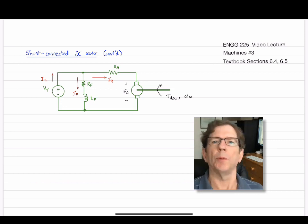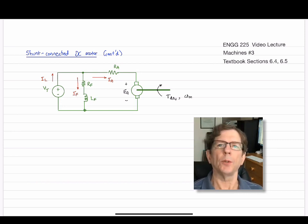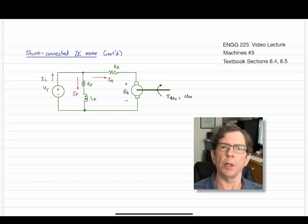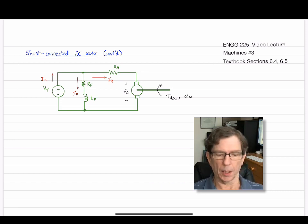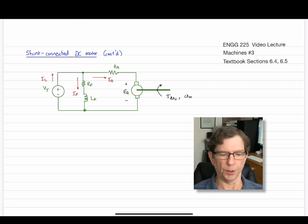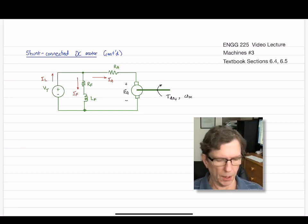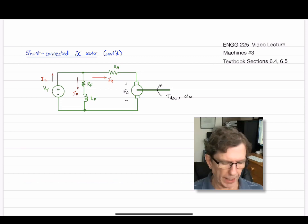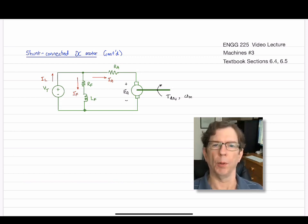Hello again, everyone. Welcome to our third and final video lecture on machines. We'll continue with an example on the shunt-connected machine configuration. And then very briefly, we'll finish off by discussing other configurations, including separately excited DC motor, permanent magnet motors, and series-connected motors.